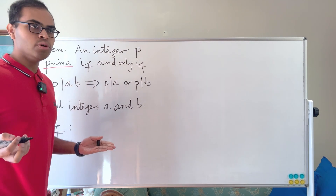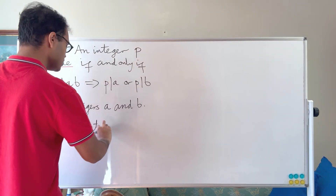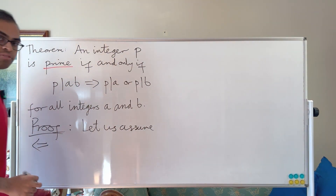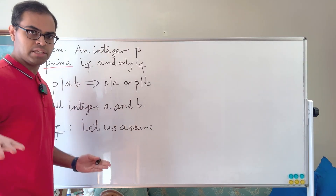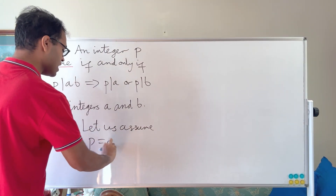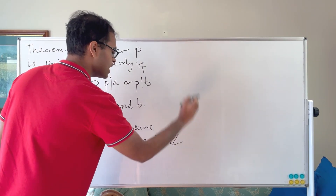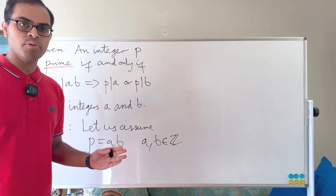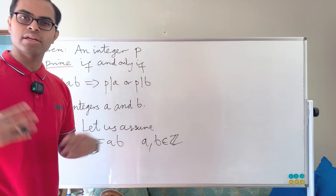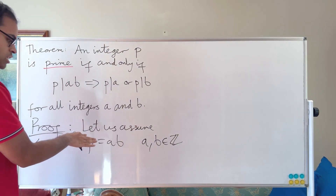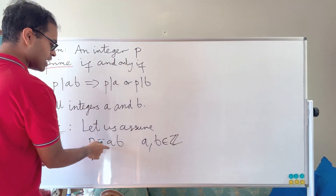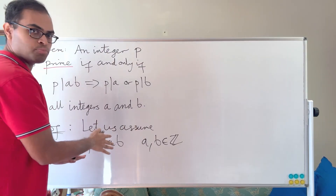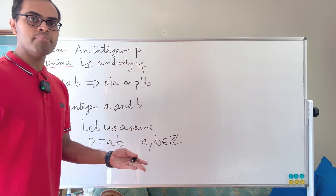How do we prove that? Well, let's assume that p has a decomposition. We're proving one direction of this if and only if. We're going to prove the only factors of p are one and itself. So let us assume that p is equal to a times b for positive integers a and b — negative signs don't really matter when talking about factors. We want to show that a is one and b is p, or a is p and b is one. That would show that p is a prime number in the usual sense.